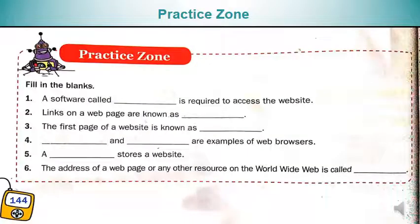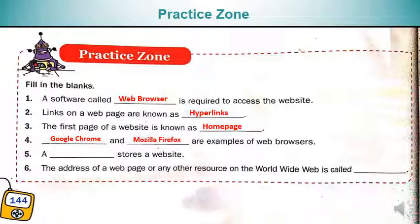On page number 144 is the practice zone with fill-in-the-blanks. A software called web browser is required to access a website. Links on a webpage are known as hyperlinks. The first page of a website is known as the homepage. Google Chrome and Mozilla Firefox are examples of web browsers. A web server stores a website. The address of a webpage on the World Wide Web is called a URL.